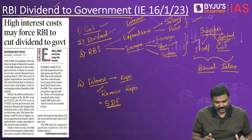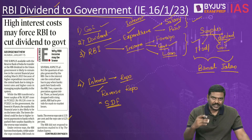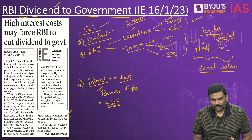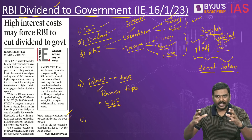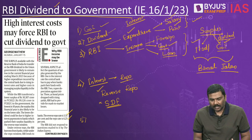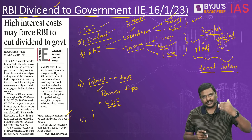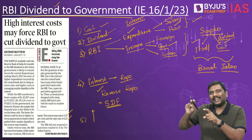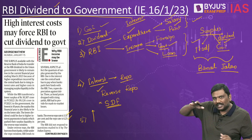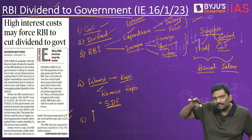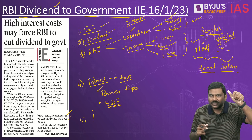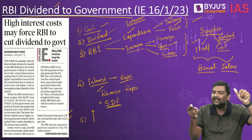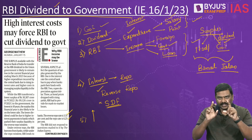Current rates: repo rate is 6.25%, SDF is 6%, and the fixed reverse repo rate is 3.35%. In recent times RBI has increased the repo rate, and as a result both SDF and reverse repo have also increased. This means the amount of interest paid by RBI to banks keeping deposits has increased, so expenses incurred by RBI have increased.